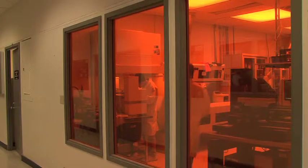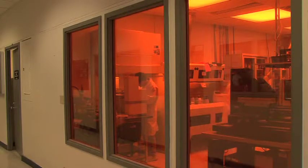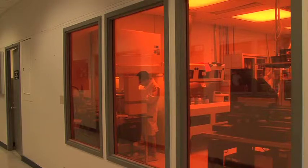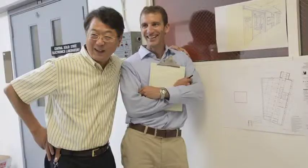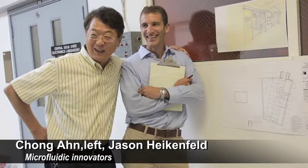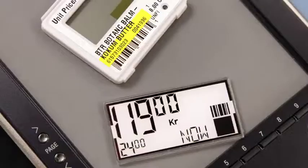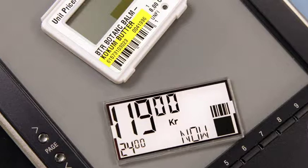We started this work in 2007 and started a startup company in 2009, Gamma Dynamics, which is now commercializing the technology. They're developing it for anything from electronic shelf labels in grocery stores to color e-readers to signage and even transparent displays.